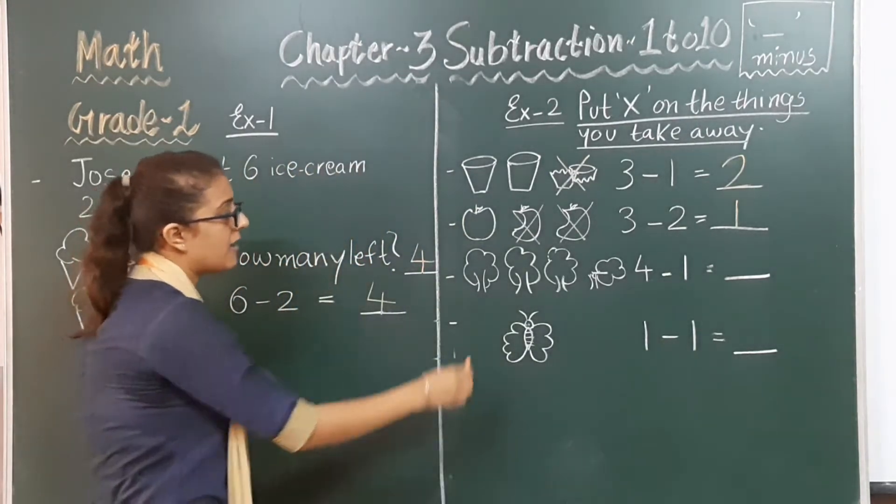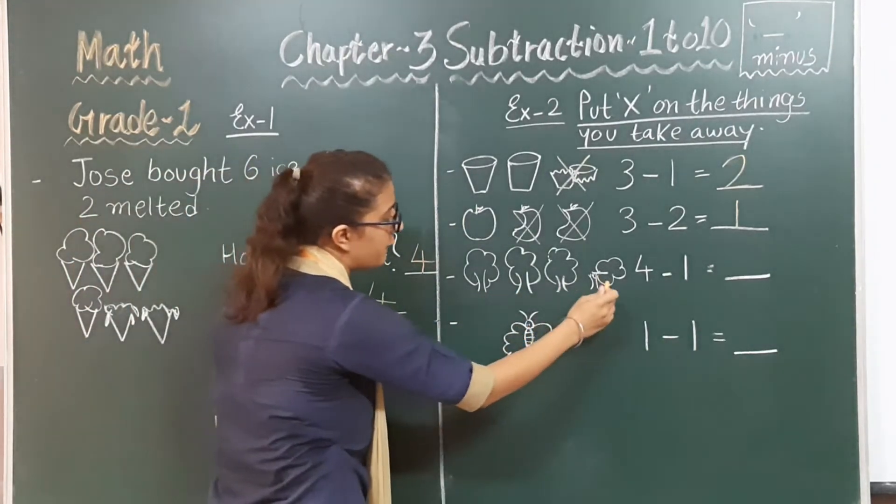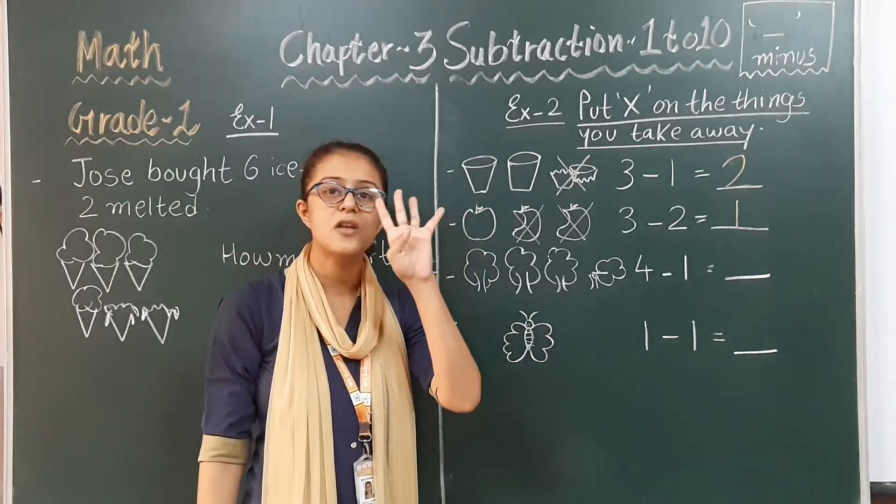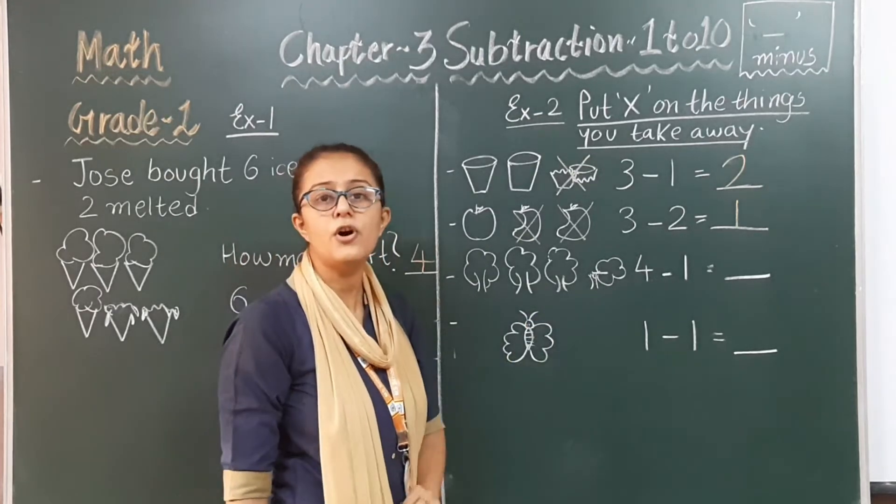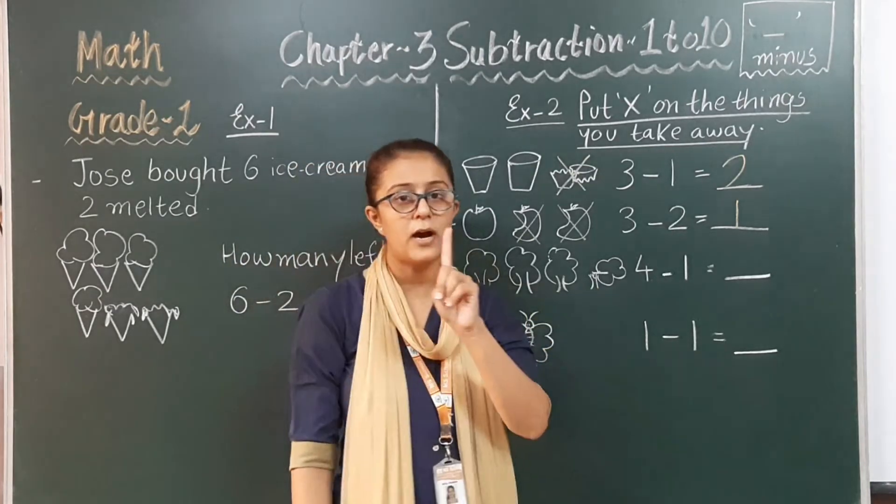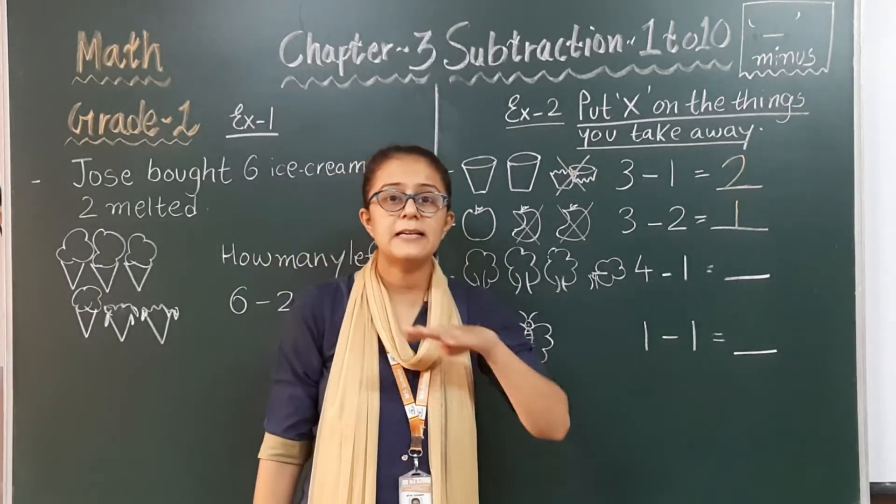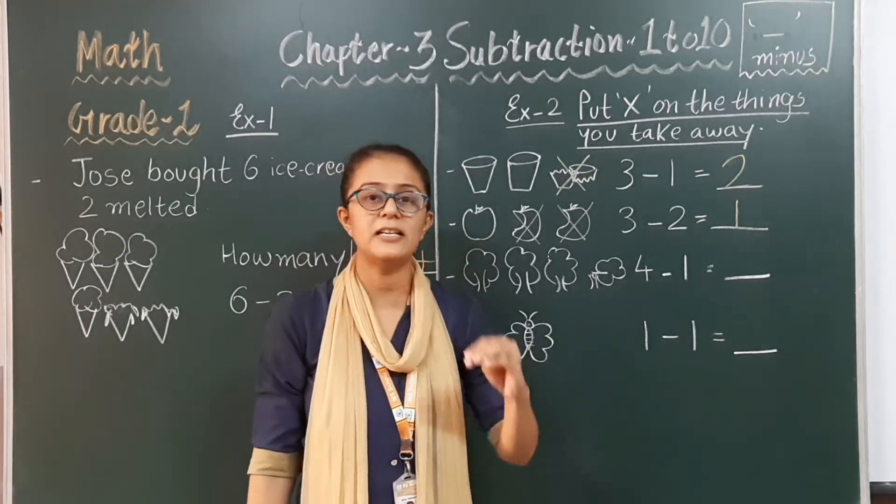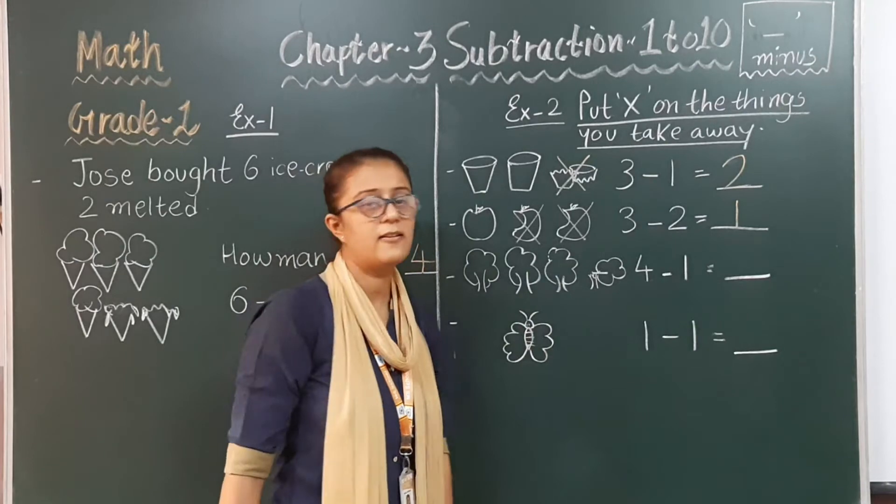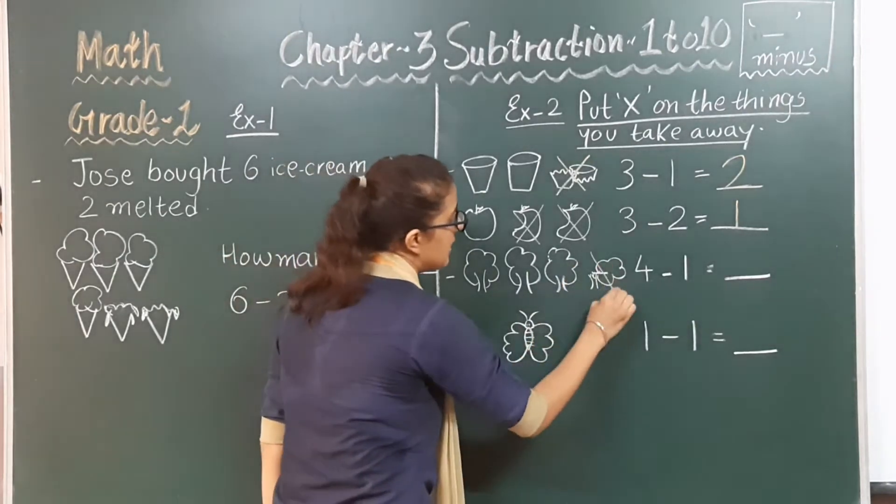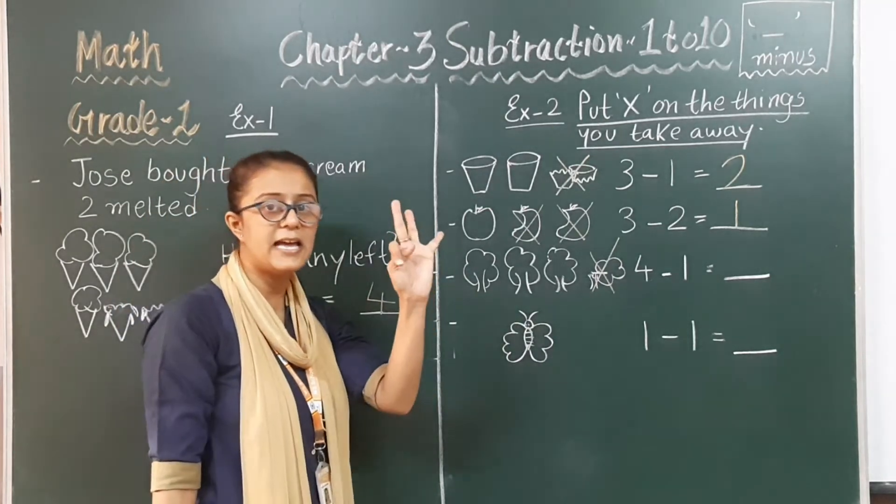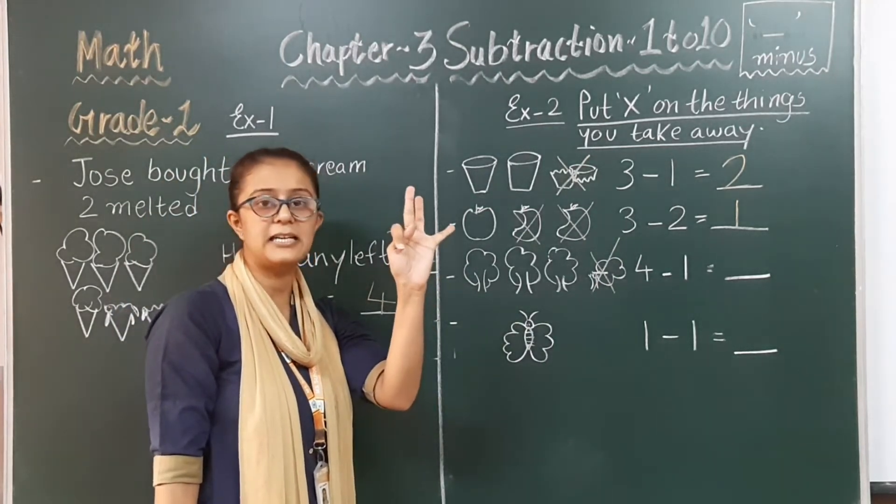Next. There are one, two, three, four trees. Total there are four trees. Now from that four trees, you can see that one tree is cut. One tree has been cut. So this tree is not counted. So now how many total trees are there if one tree is cut?